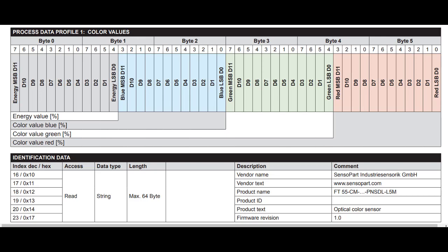And you can see here in IO-Link, you have the energy value, the blue, green, and red data, so you can set up the tolerances like color mode in your PLC. And again, let the sensor do the best fit.